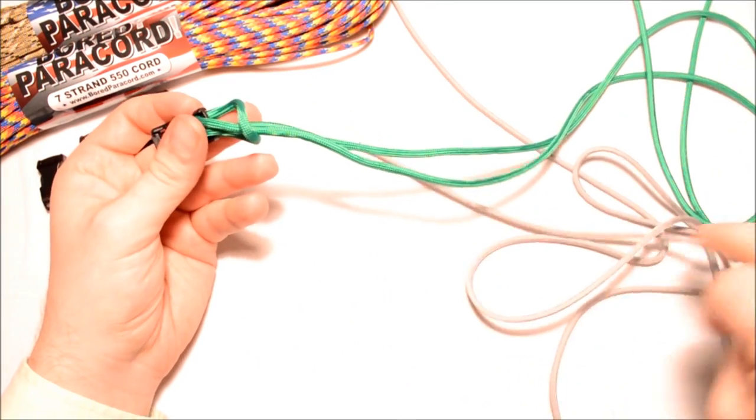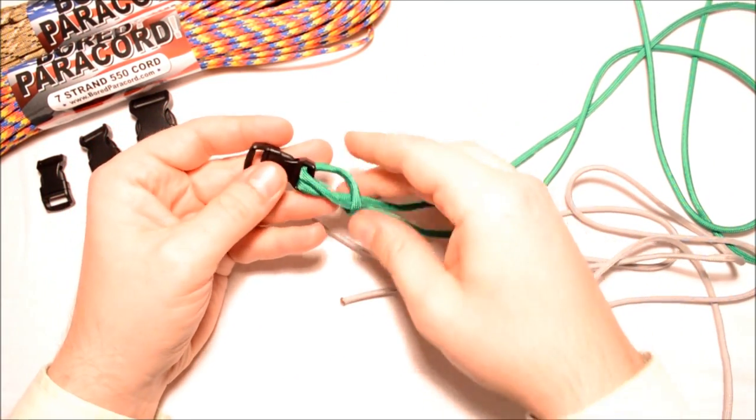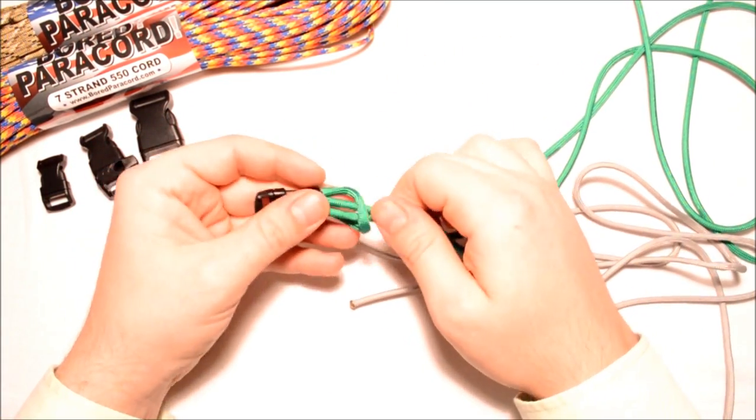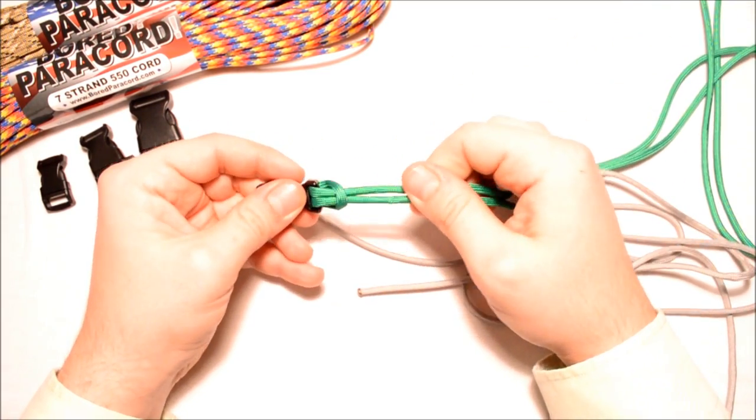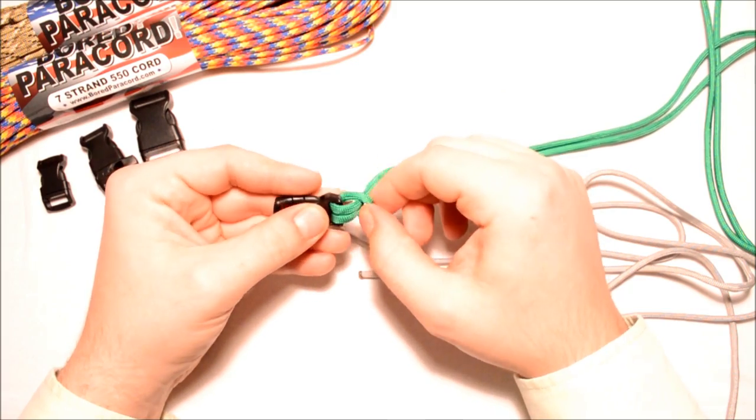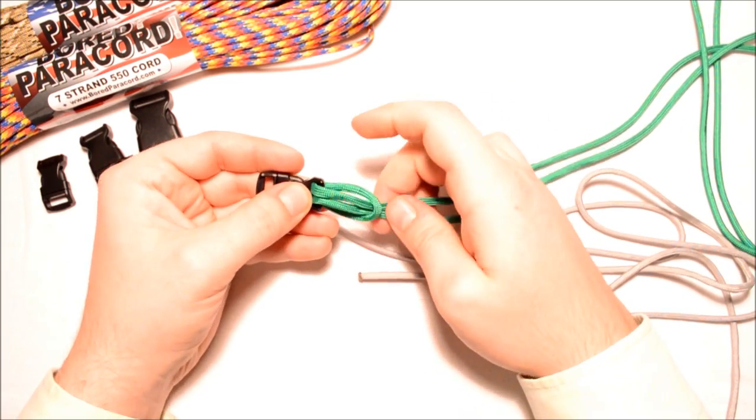Because there's an extra step at the end, the buckle goes on at the very end on this one. So what I've already done, I've got six feet of kelly green, I've already done the cow's hitch at the center point of that green piece.